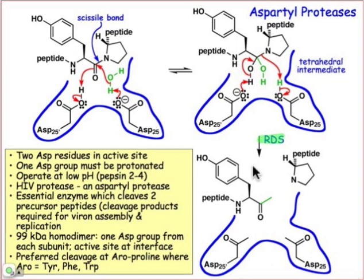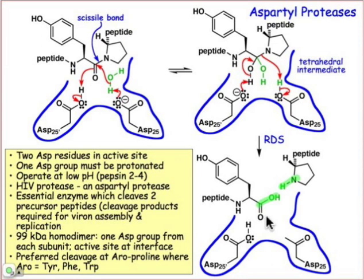This is actually the rate-determining step, and so in trying to think about an inhibitor, we're going to want to pay a lot of attention to the transition state structure for this rate-determining step. That immediately yields the product.